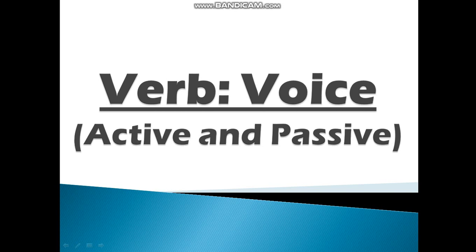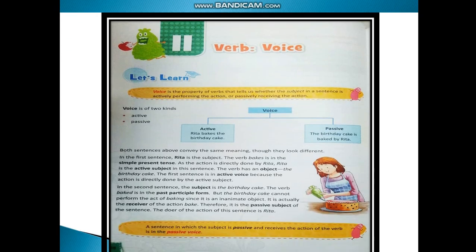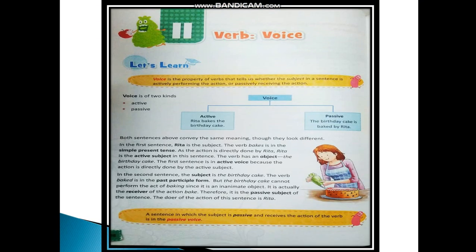Hello students and welcome to your English language class. Today we will be learning about active and passive voice. Voice is the property of verbs that tells us whether the subject in a sentence is actively performing the action or passively receiving the action. Voice is of two types: active and passive.